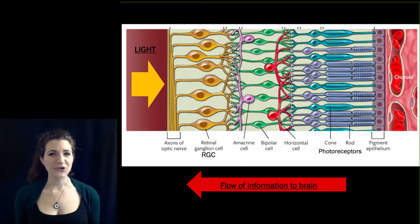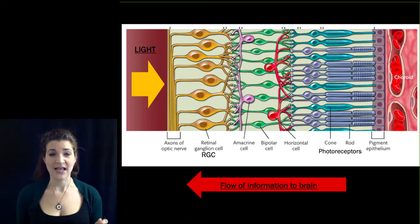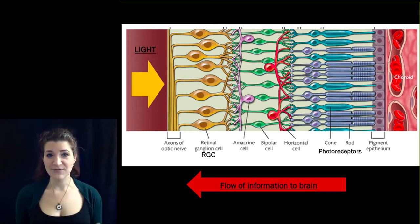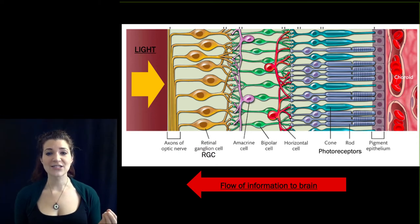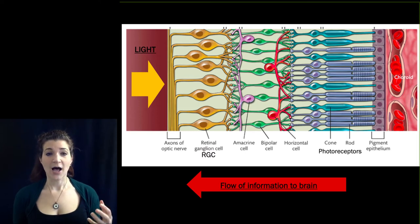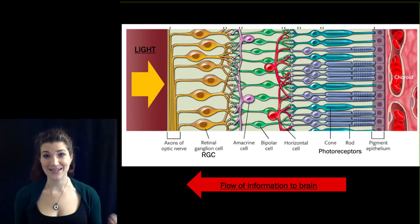So why this counterintuitive layout? It's not entirely clear. It may be to help regenerate the photopigment — the light-sensitive matter in the rods and the cones. The tips of the photoreceptors are embedded in the choroid layer, which has a really rich blood supply. So when the photopigments in the rods and the cones break down via the process of transduction, the choroid can more easily get nutrients to the rods and cones to help regenerate that photopigment.